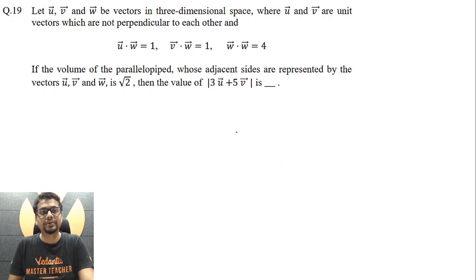Let u vector, v vector, w vector be three vectors in 3D space where u vector and v vector are unit vectors which are not perpendicular to each other. That means u vector dot v vector is not zero, so to speak.